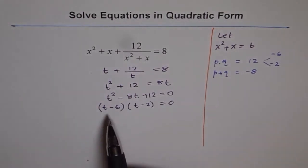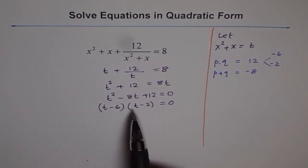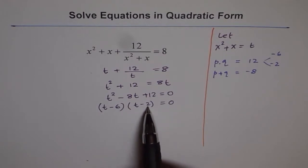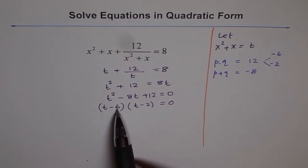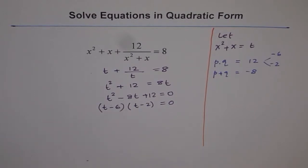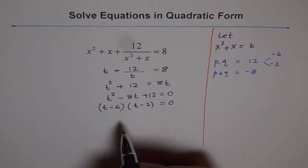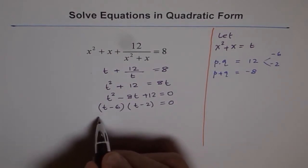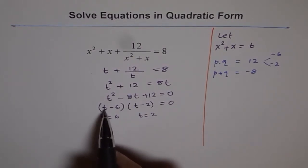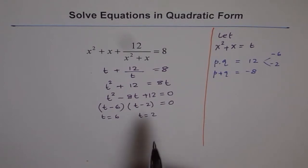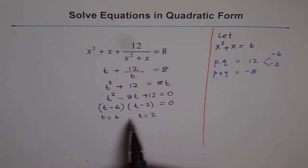It's a good idea to expand and check: t times t is t squared, minus 6 times minus 2 is plus 12, and adding minus 2t and minus 6t gives minus 8t. That works. The equation is true for t equals 6 or t equals 2, since substituting either value makes one factor zero, and zero times anything is zero.